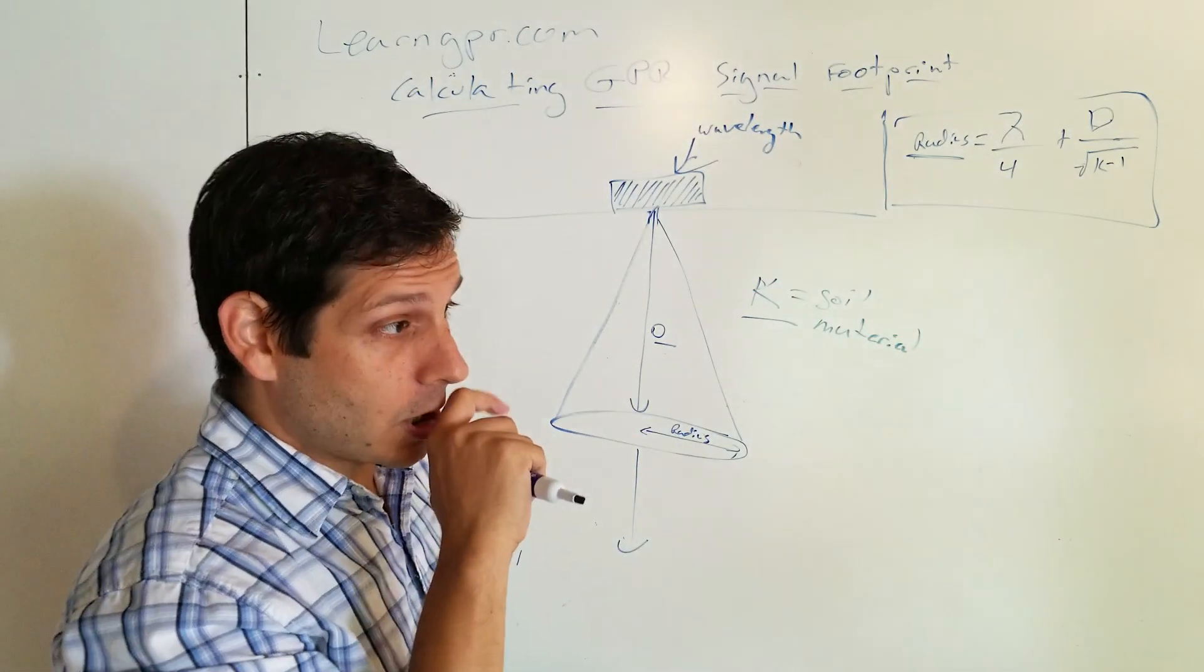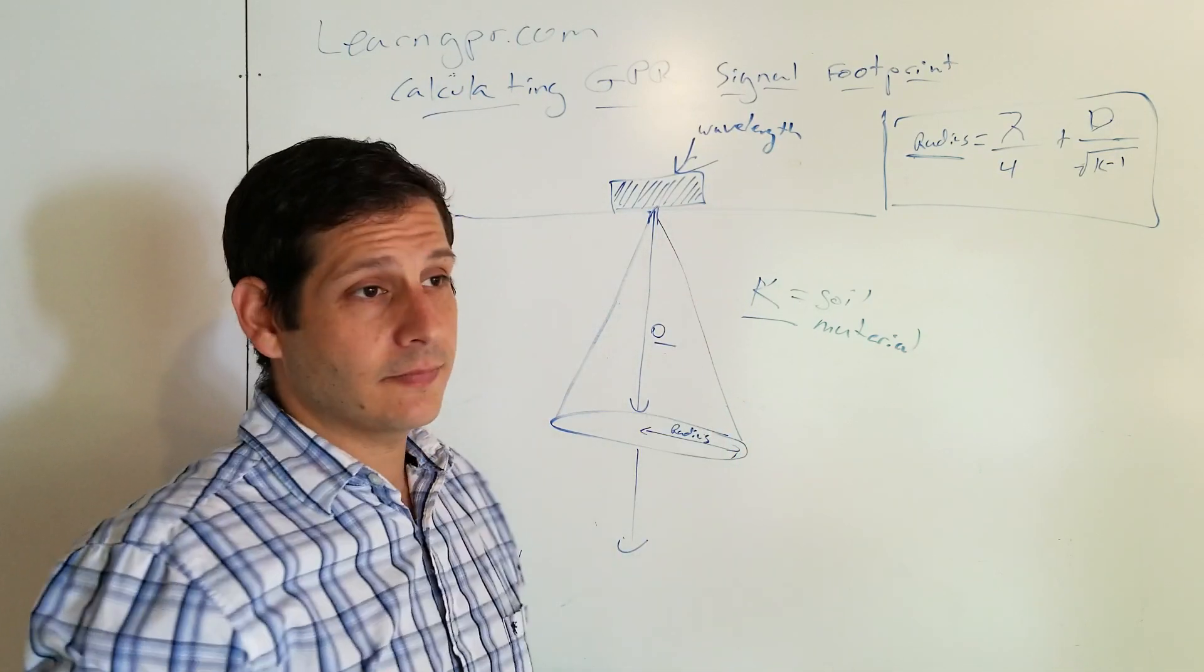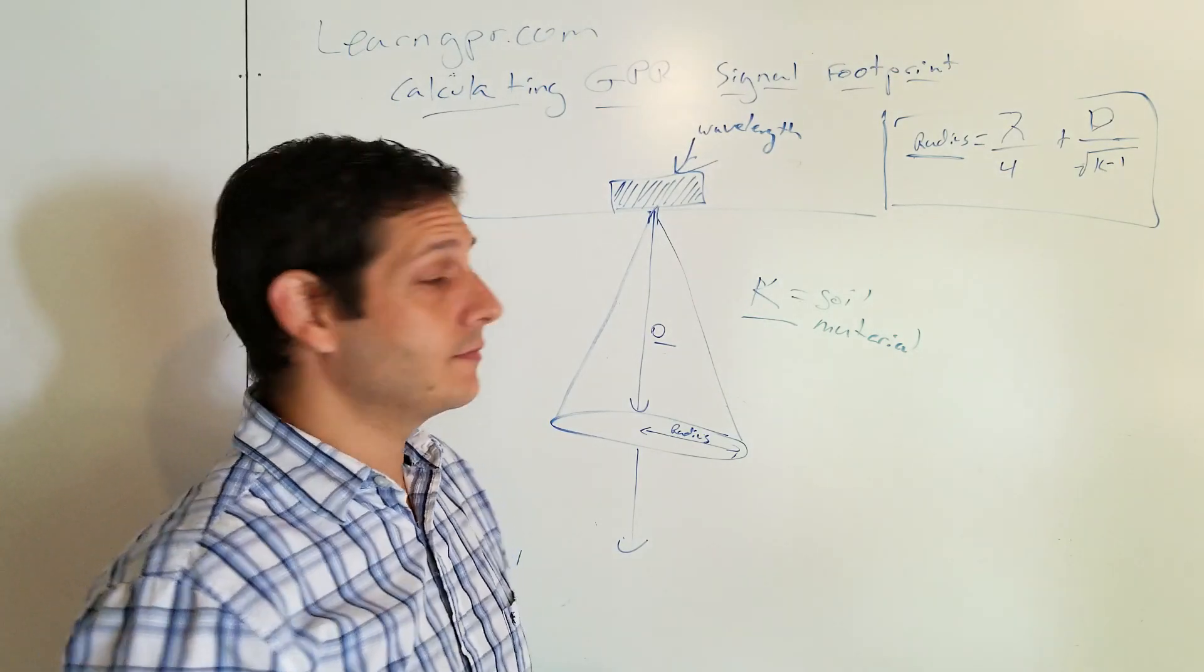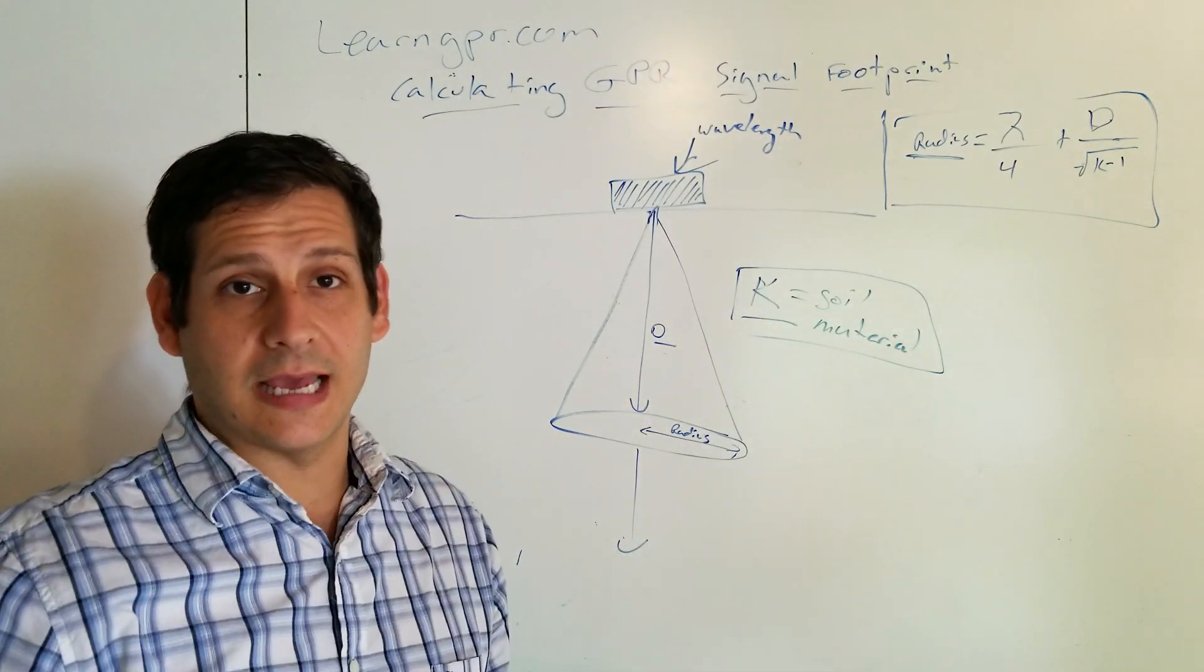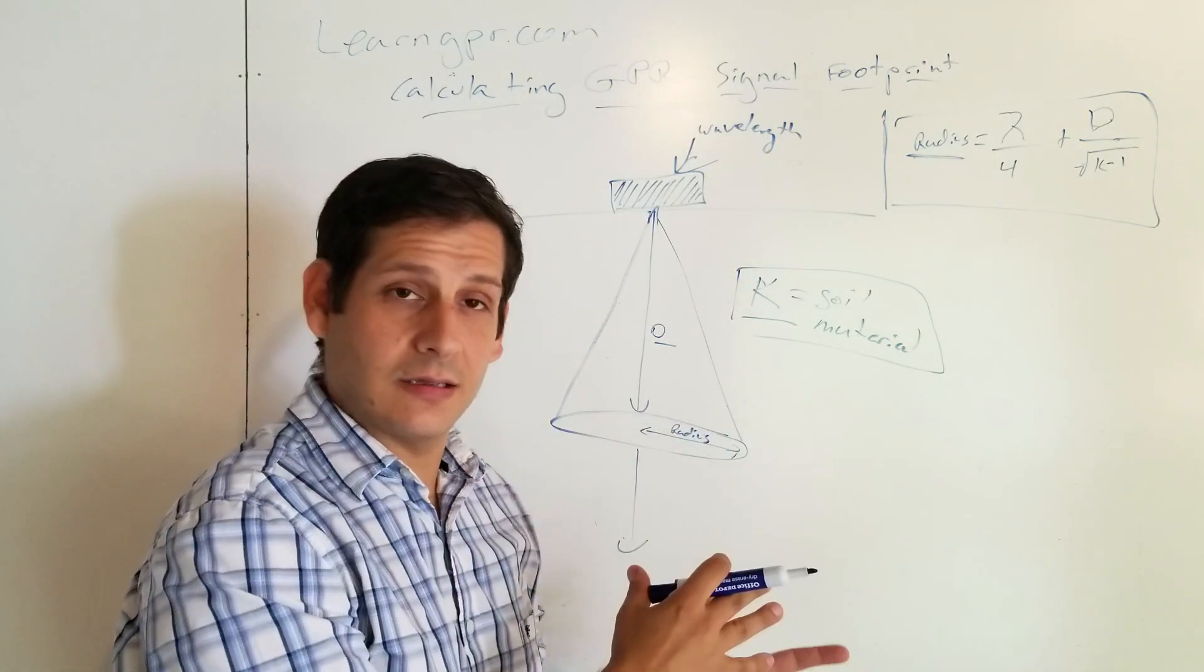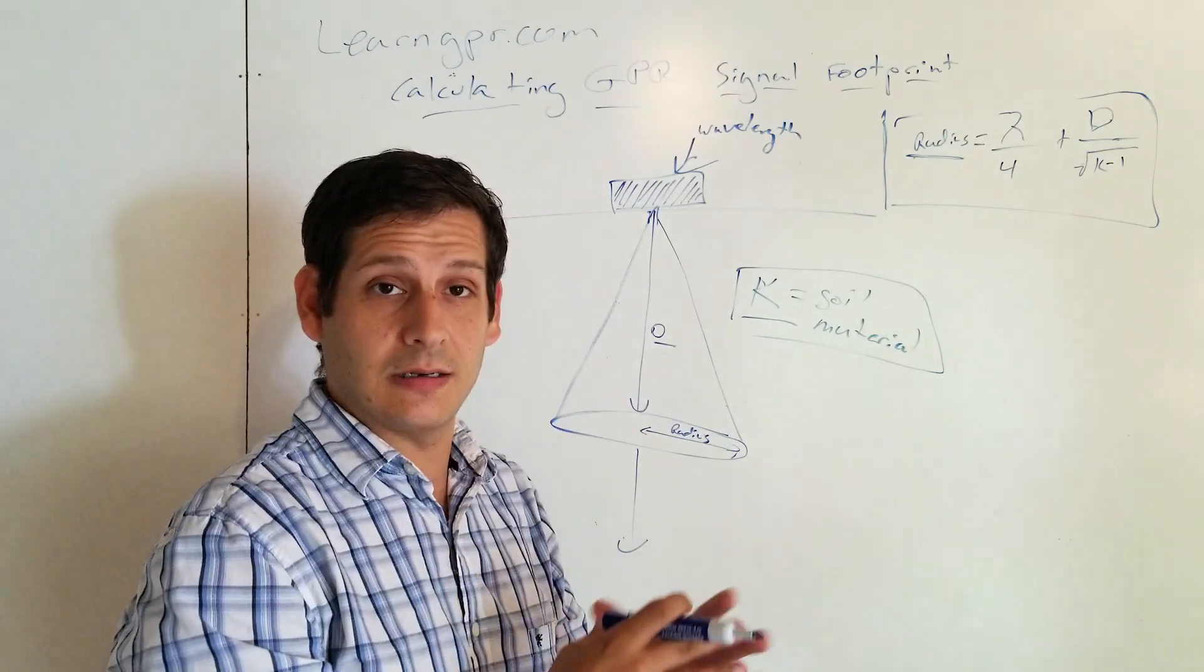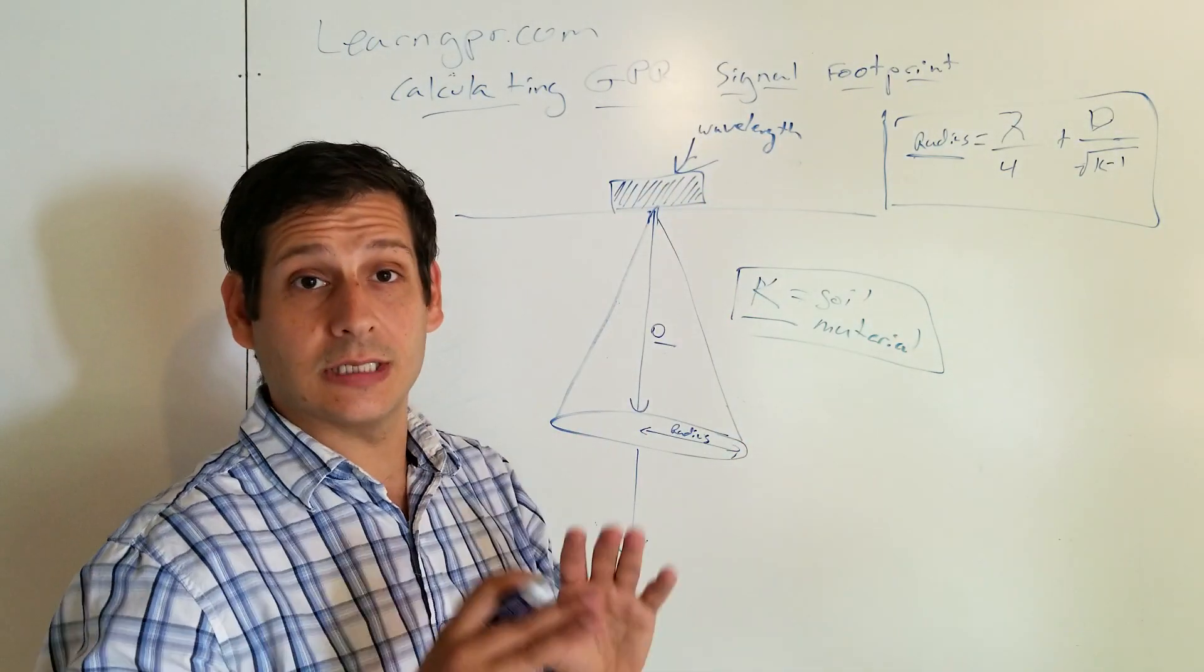First thing you're going to have to know is the frequency of the antenna. And then you have to know the wave velocity. So how do you get wave velocity? You can use your permittivity to estimate wave velocity. So once you know wave velocity, then you can divide the velocity by the frequency in gigahertz. Velocity would be in meters per nanosecond divided by frequency in gigahertz. It's going to give you wavelength.